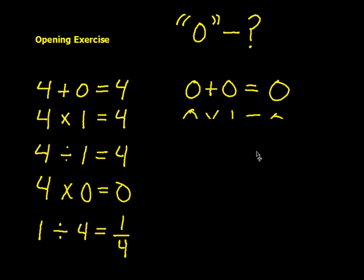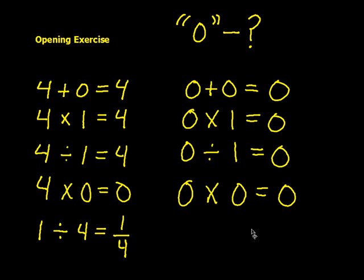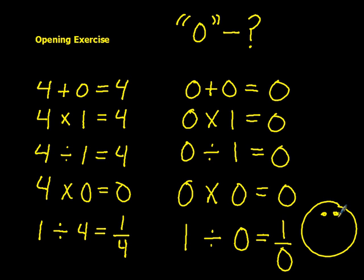So this time, 0 plus 0 does equal 0. 0 times 1 does equal 0. 0 divided by 1 does also equal 0. 0 times 0 equals 0. But this last one, 1 divided by 0 equals 1 over 0, that is incorrect. And the reason, the simplest reason for understanding that, you can't take one thing and put it in 0 groups. So if you're holding your pencil in your hand, try to put it in a group of 0. You simply can't do it, so it's impossible.